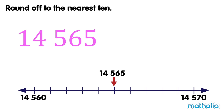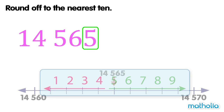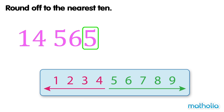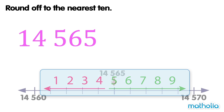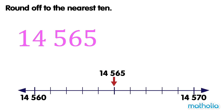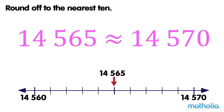Let's round off fourteen thousand five hundred and sixty-five to the nearest ten. The digit in the ones place is five. Digits that are five or more are rounded up. So, fourteen thousand five hundred and sixty-five is rounded up to fourteen thousand five hundred and seventy. To the nearest ten, fourteen thousand five hundred and sixty-five is approximately equal to fourteen thousand five hundred and seventy.